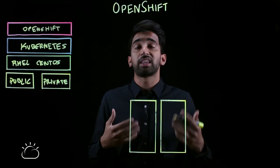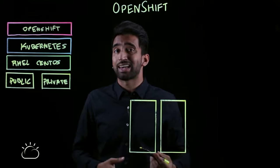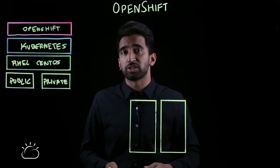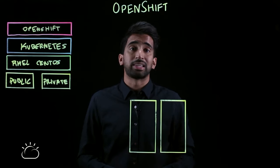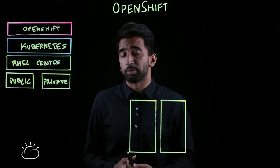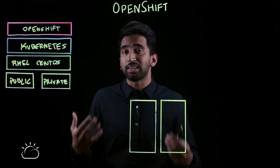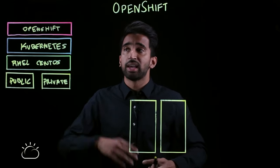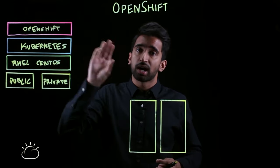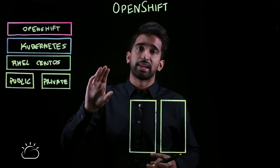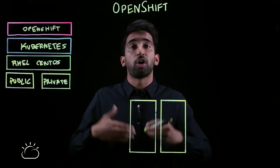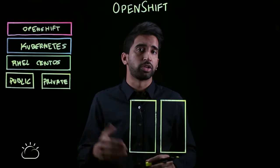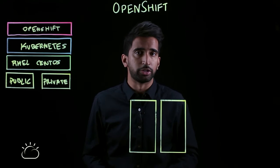OpenShift takes a lot of the difficult tasks, like deploying applications and doing things like day-to-day operations, easier by building a web console and a CLI, as well as a facade on top of Kubernetes, to make all of those tasks just a little bit more streamlined and easy to do.